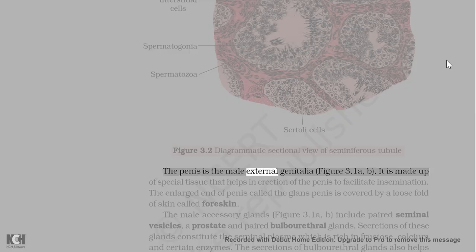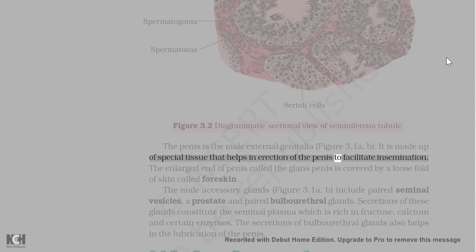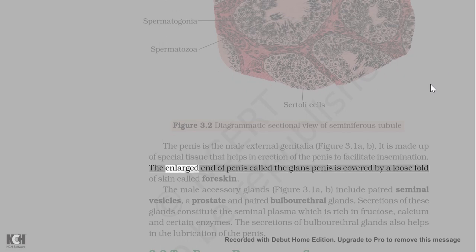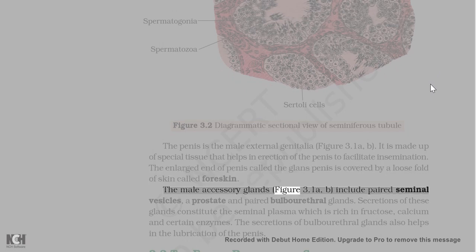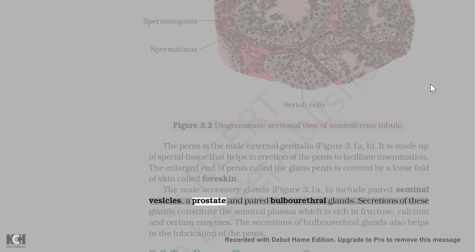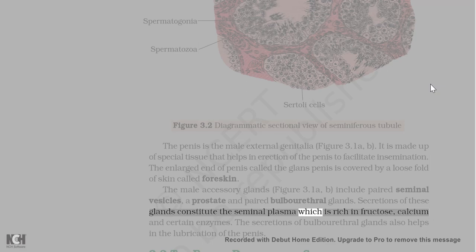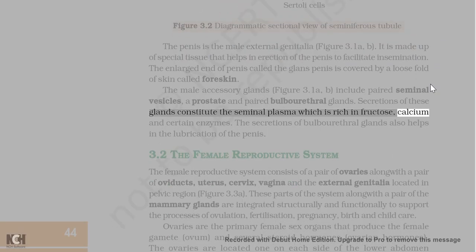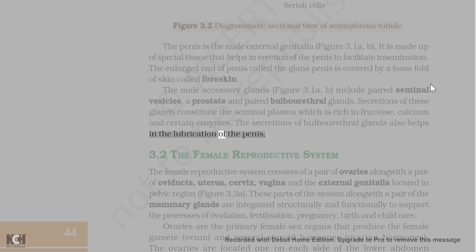The penis is the male external genitalia. It is made up of special tissue that helps in erection of the penis to facilitate insemination. The enlarged end of the penis called the glans penis is covered by a loose fold of skin called foreskin. The male accessory glands include paired seminal vesicles, a prostate, and paired bulbourethral glands. Secretions of these glands constitute the seminal plasma which is rich in fructose, calcium, and certain enzymes. The secretions of bulbourethral glands also help in the lubrication of the penis.